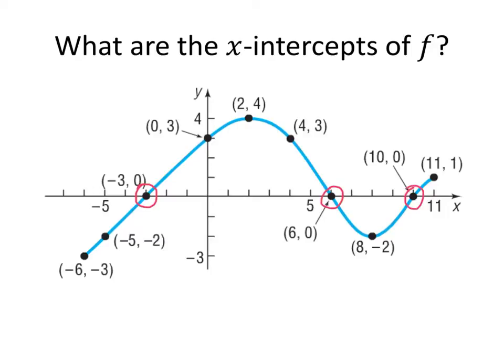Now, if they had asked us how many x-intercepts the graph has, our answer would be 3. But they actually asked us, what are the x-intercepts of f? And there's two different ways we could answer this question. So the x-intercepts are the actual points where the graph crosses the x-axis. So we could write (-3, 0), (6, 0), and (10, 0). And that would be a perfectly fine answer to our question.